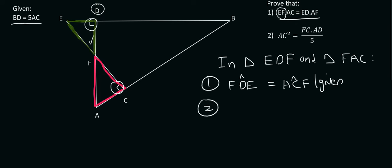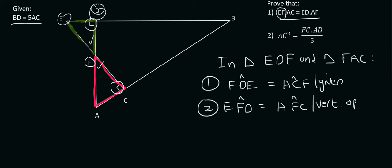Number two, we know that this angle is the same as this angle. Please don't say F1 and F2 — they haven't given you F1 and F2, so you can't use that. For the top one you could say EFD, and for the bottom one it could be AFC. The reason for that is vertically opposite angles. Then for the third one we don't even have to look further — we know that angle A will have to be the same as angle E, because the last one is always the same due to angles in a triangle.